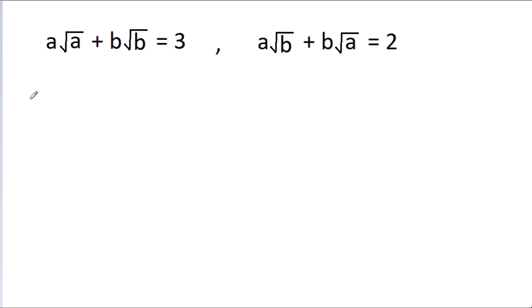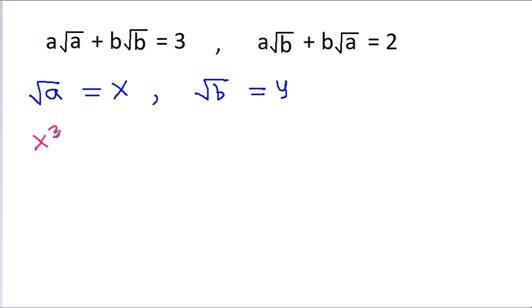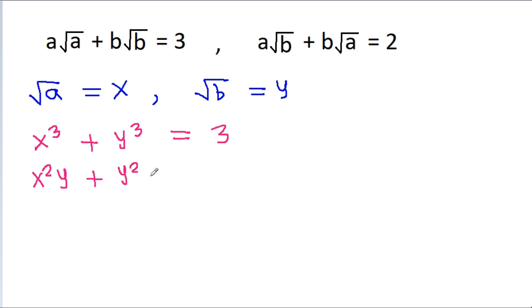So if we take √a as x and √b as y, then a√a will become x cubed and b√b will become y cubed, that is equal to 3. And a√b plus b√a becomes x squared·y plus y squared·x, that is equal to 2. Suppose this is equation 1 and this is equation 2.